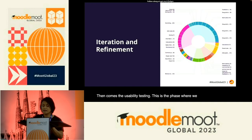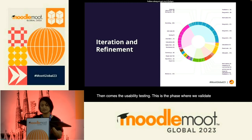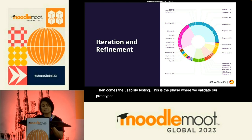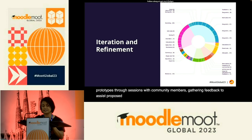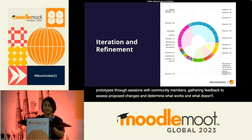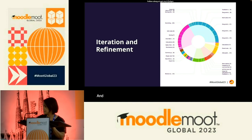And then, iteration and refinement. Based on the feedback from usability testing, we make modifications to our prototype. This iterative process is crucial for fine-tuning the user experience, ensuring the design is intuitive and efficient for both new and experienced users.